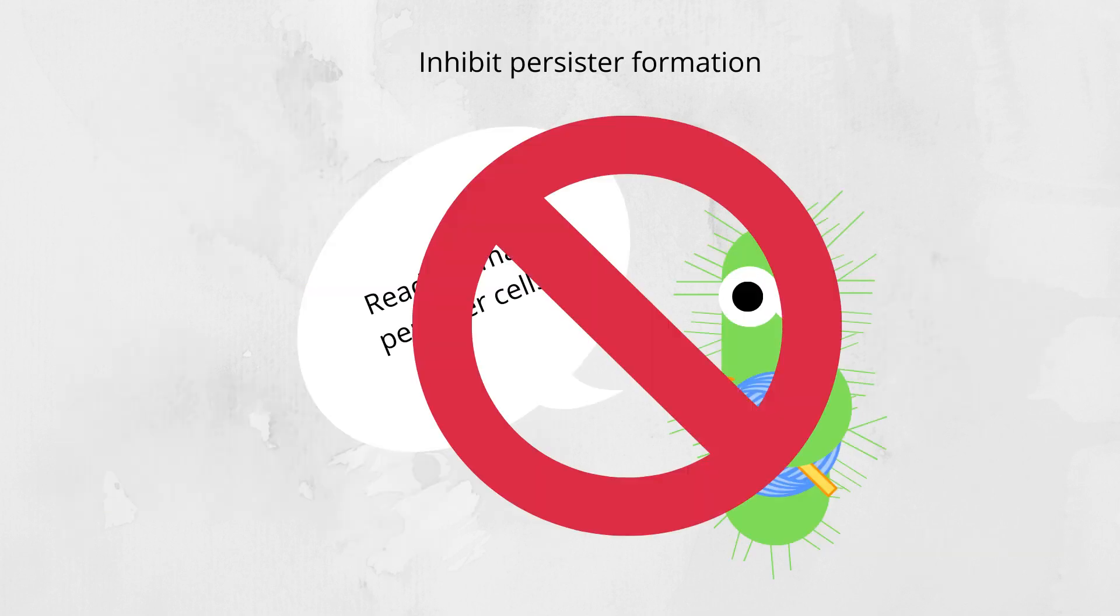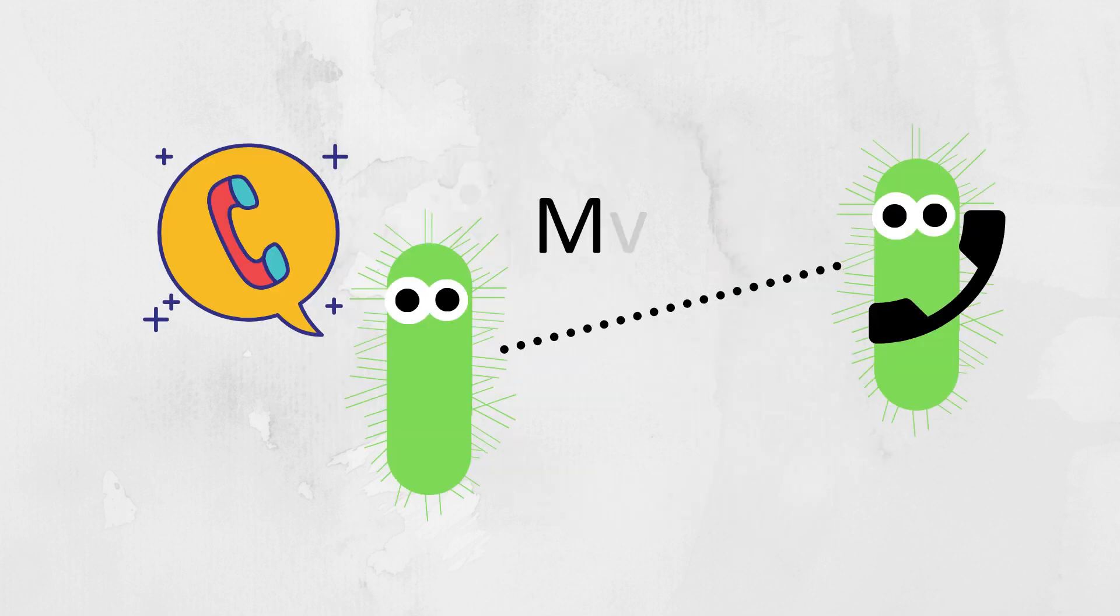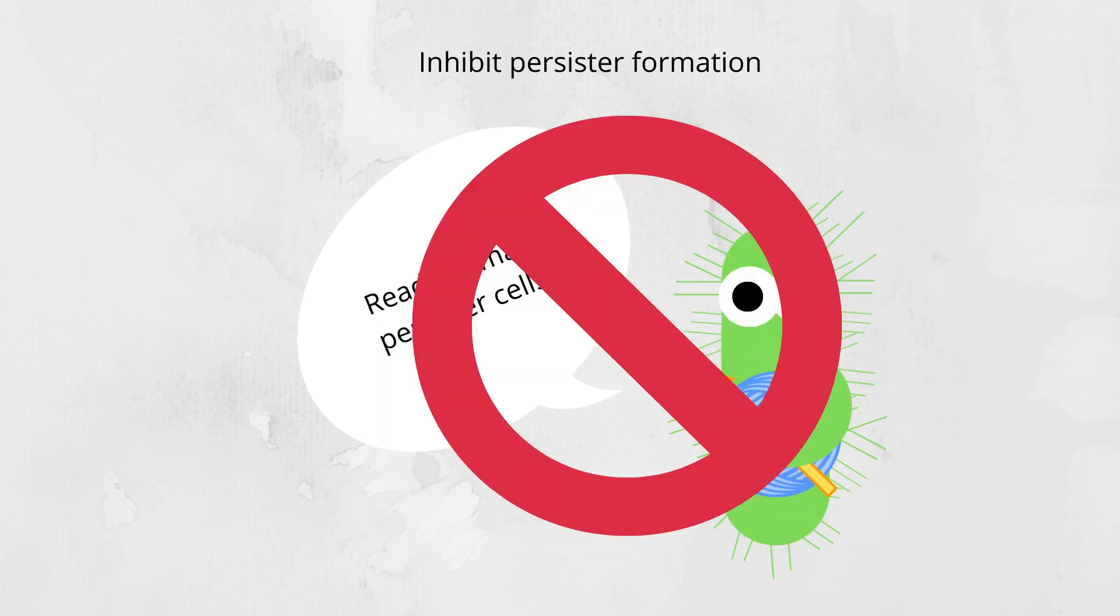Group 3, inhibit persister cell formation. MVF4 is a regulated quorum-sensing virulence pathway in Pseudomonas aeruginosa. This pathway controls the virulence of Pseudomonas aeruginosa. Inhibitors of this pathway block the acute virulence of this organism, but have also been found to inhibit the formation of antibiotic-tolerant cells. An example of one of these inhibitors is M64.